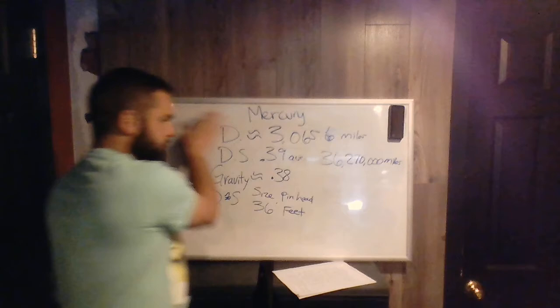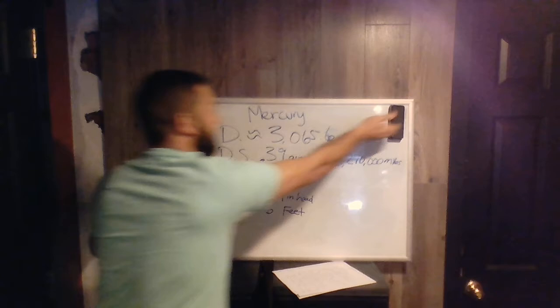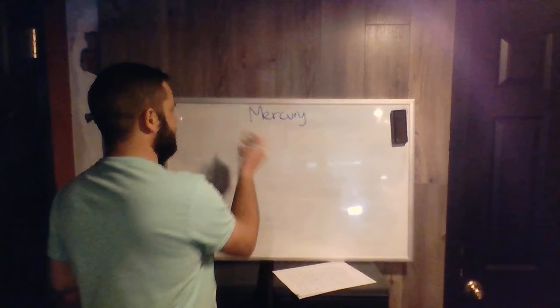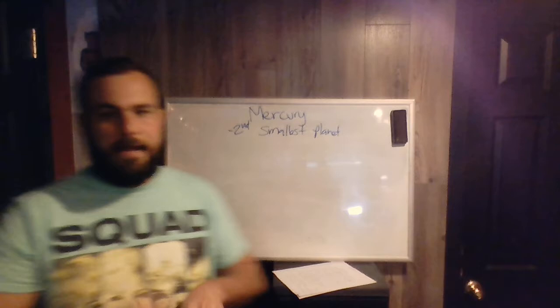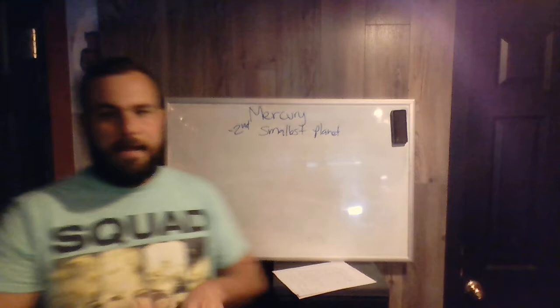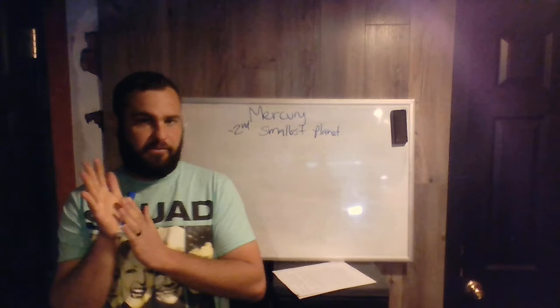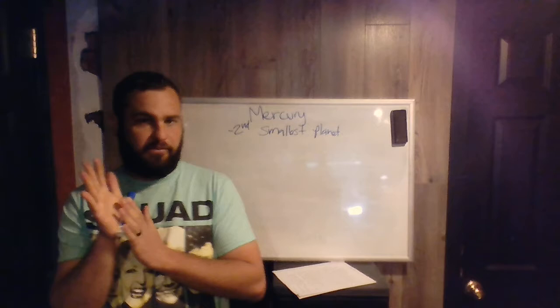We're going to keep talking about Mercury because there are still some things we need to discuss. Those were all things we already learned — just a very quick review. But I wanted to talk about how Mercury is the second smallest planet. It's interesting that Mercury is the second smallest planet considering that it's the closest one to the Sun. That means that Mercury is extremely dense. We learned earlier in the year that the more dense the object, the closer it is to the Sun. So Mercury is the most dense of all the planets, even though it's the second smallest.